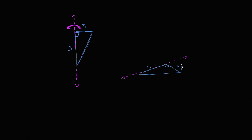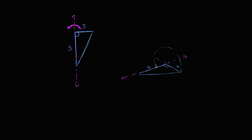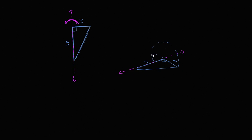This end right over here is going to rotate around and form a circle with a radius of three. When it intersects — if that was on the ground — it's going to be three again. It's going to keep going down, and it's going to look something like this. That's what the base is going to look like.